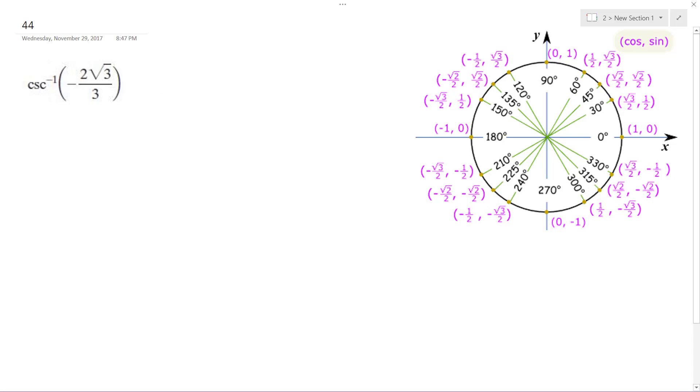Alright, so for this problem, we're bound between negative pi over 2 and pi over 2. Cosecant is 1 over sine. So this can actually be reduced down, because it's rationalized, it's negative 2 over root 3.